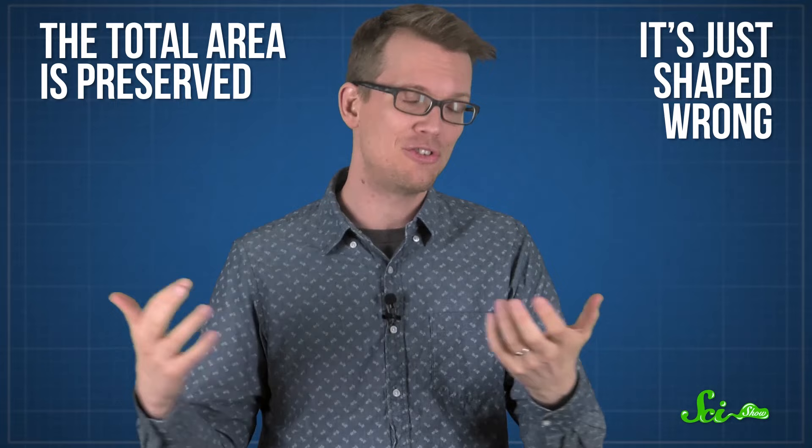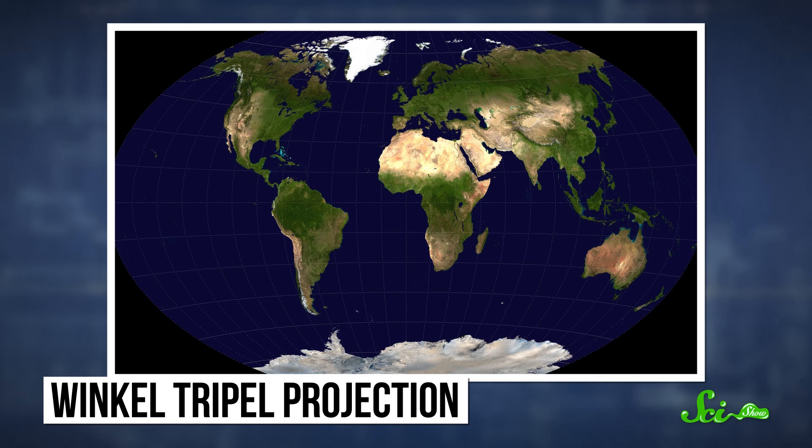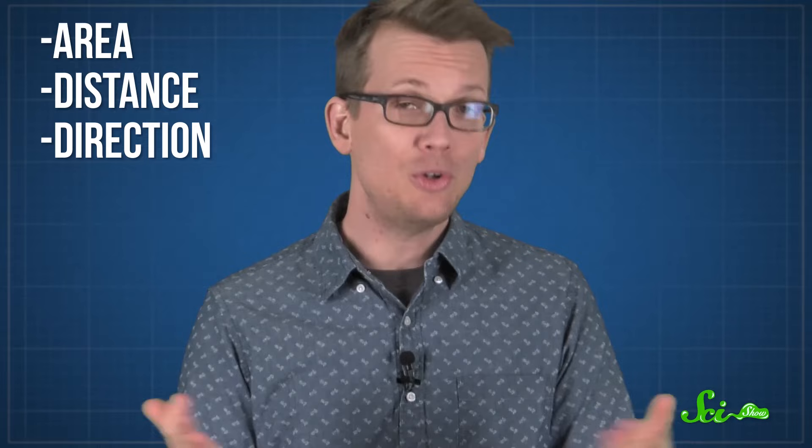Other maps go for a nice compromise between shape and size. Like the Winkel Tripel projection, which is what National Geographic uses in their maps. This projection was developed by German cartographer Oswald Winkel in 1921. And the tripel in the map name is not a last name, it's just how you spell triple in German. It refers to the three things Winkel wanted to compromise between: area, distance, and direction. To do that, he just averaged out two other map projections.